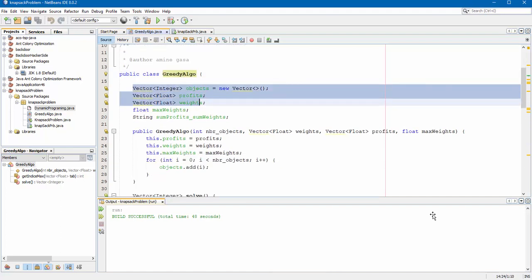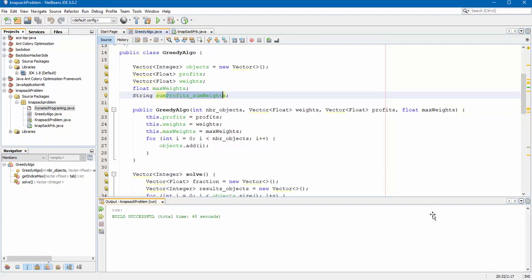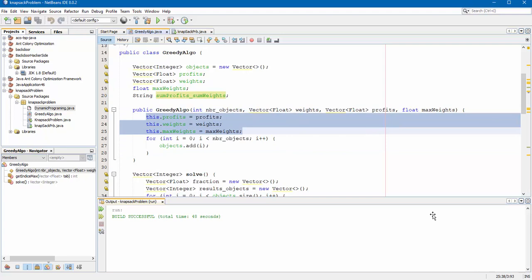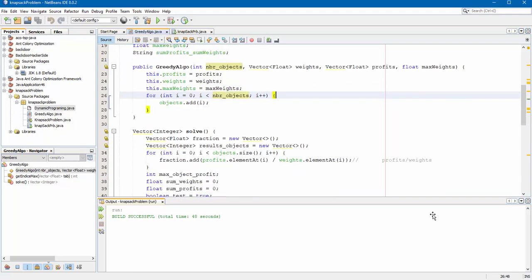I create three vectors. The first vector for objects and the second profits and the third weights. This is the maximum weights. Float variable. And this is a string variable. Contains the final result. This is the constructor. I initialize its vector. And I create here seven objects. This is the number objects. It is an input variable.